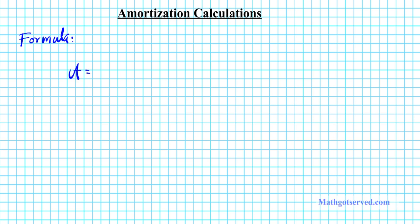A equals P, the principal, times the rate per period R over N, N times 1 plus the rate per period R over N raised to the number of periods Nt, divided by 1 plus the rate per period R over N raised to the Nt, number of periods in all, minus 1. So this is one variation of the formula for calculating amortization.